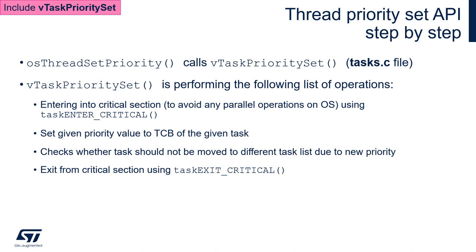It performs the following list of operations. First, we enter a critical section to avoid any parallel operations on the operating system, using the taskENTER_CRITICAL macro. From this moment, all interrupts related to the operating system — SysTick, PendSV, and all interrupts allowed to execute OS functions — are stopped and masked using the BASEPRI register. After this, we can perform operations on the priority of a given task. It is really important to have the rest of the OS frozen at this moment to ensure there is only one place making modifications, with no competition.